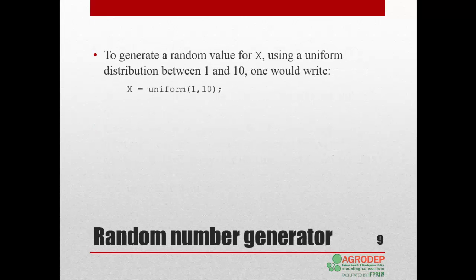To generate a random value for X using a uniform distribution between 1 and 10, we would write X equals the distribution function uniform, followed by the values 1 and 10 in parentheses and separated by a comma. The semicolon ends the distribution statement.